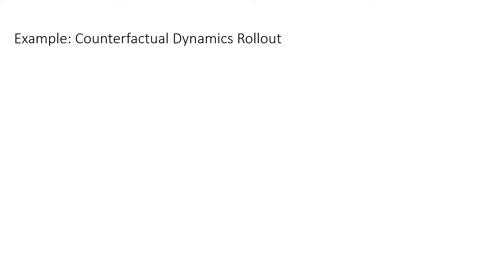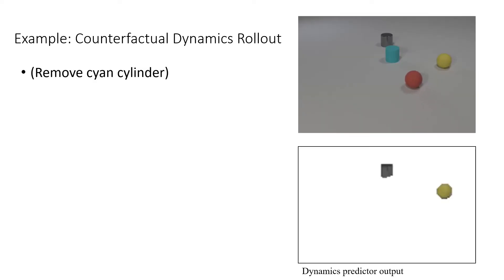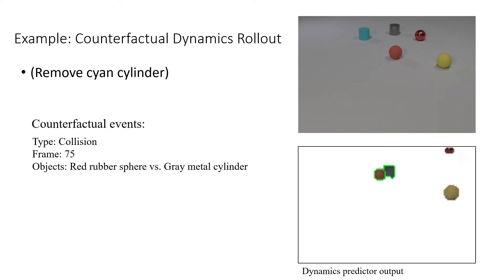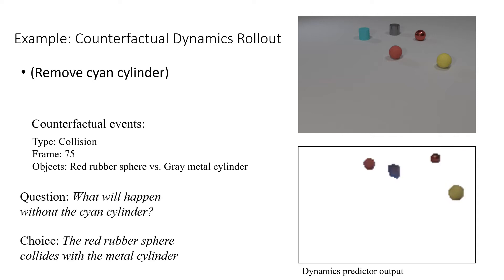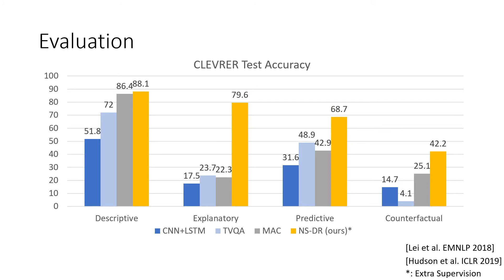Let's look at an example of the NDR performing counterfactual reasoning. The upper window shows the input video, and the lower window shows the predicted trajectory when the cyan cylinder is removed. Our model is able to capture the counterfactual event without observation and answer the question correctly. Quantitative evaluation shows that our model improves performance on CLEVRER, especially on the more challenging explanatory, predictive, and counterfactual questions. This demonstrates that structural representation and dynamic modeling are the essential missing components for solving this task.